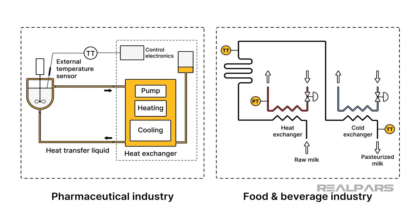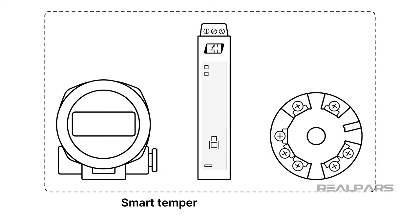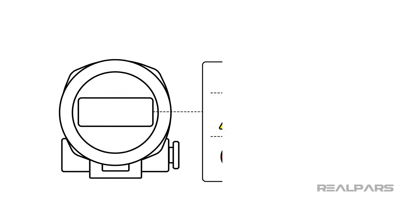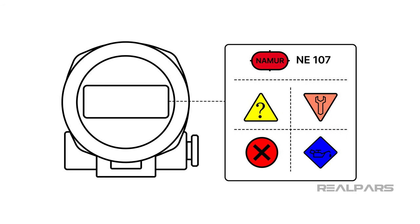In this video, we will discuss the importance of accurate temperature measurement in industrial settings. We'll introduce you to smart temperature transmitters and their pivotal role in ensuring accurate and precise temperature control. We will also introduce you to the impact of NAMUR NE107 in enhancing the reliability of industrial processes.